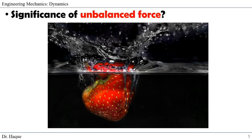Significance of unbalanced force. The reason the strawberry creating a nice splash and drowning is because of the unbalanced force. The summation of force does not equal zero, creating an unbalanced force causing the motion of the strawberry downward. The water removed by the strawberry is less than the weight of the strawberry. That's why the unbalanced force is creating the strawberry to drown in the water.